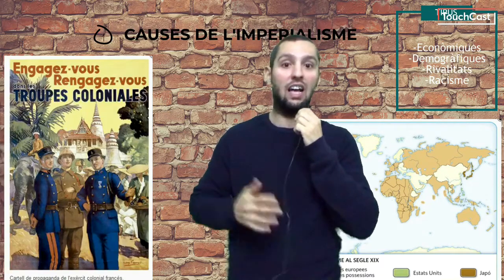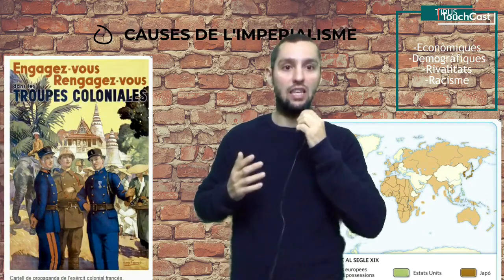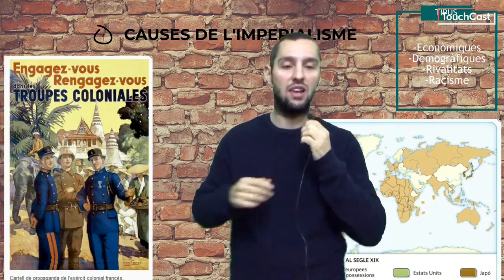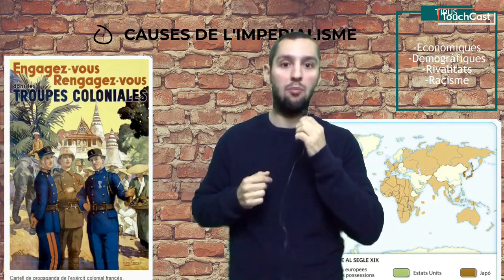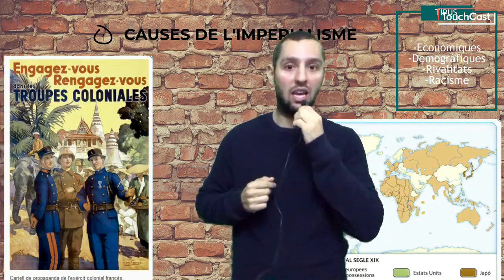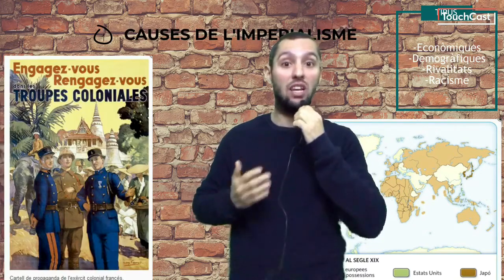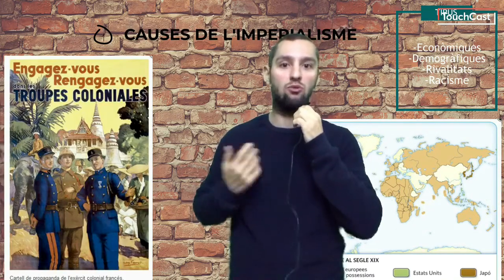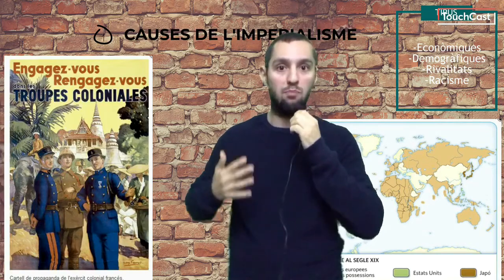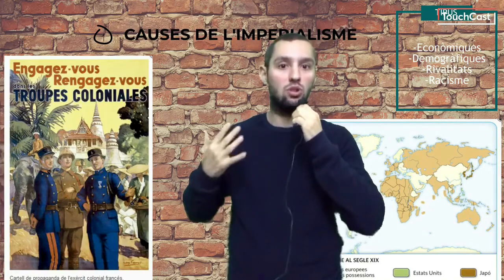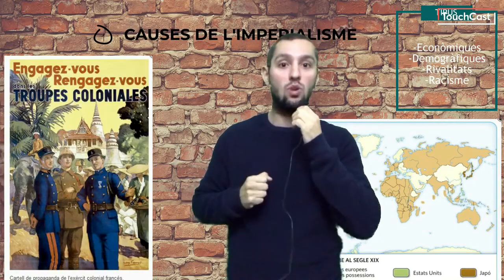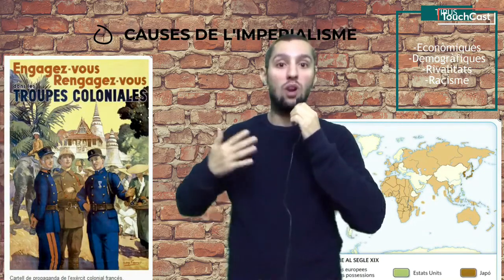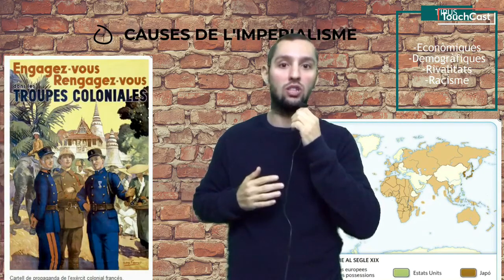Next, on demography: we see an irresistible rise from the beginning of the 19th century, with an increase in the European population going from 200 million to nearly 460 million inhabitants. The shift from a pre-industrial regime to a totally industrialized one is evident, which is why migration to other continents was a constant during this process.